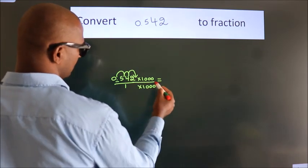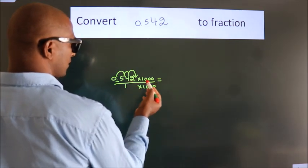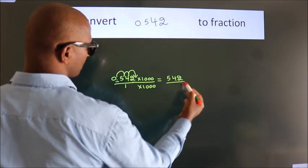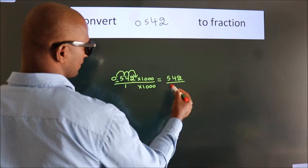Next. 0.542 times 1000, 542. 1 times 1000, 1000.